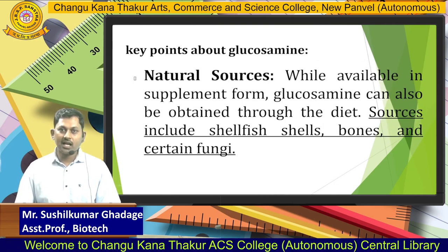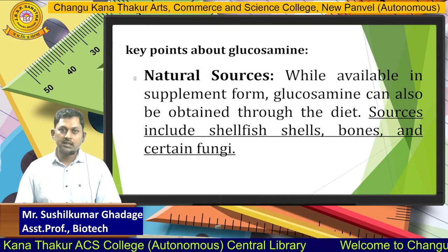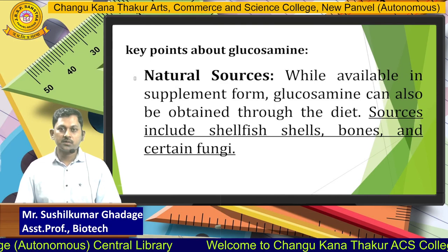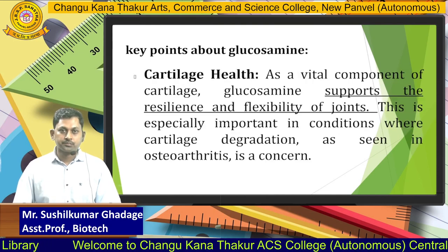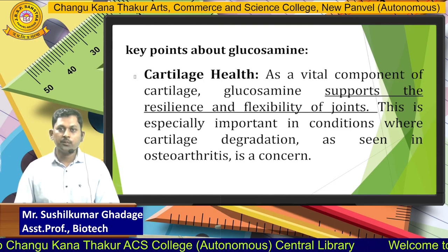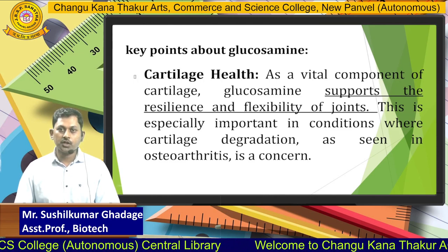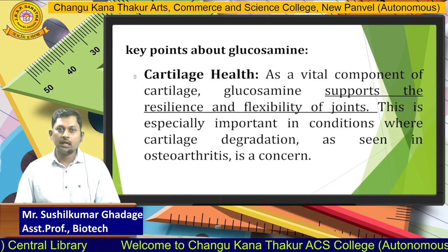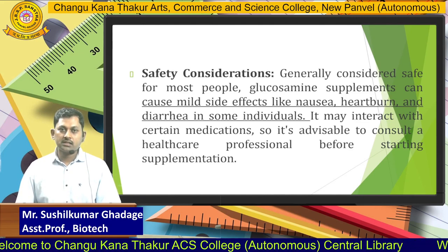Glucosamine can also be obtained through the diet from sources such as shellfish shells, bones, and certain fungi. It is a vital component of cartilage, supporting the resilience and flexibility of joints. This is especially important in conditions where cartilage degradation occurs, as seen in osteoarthritis.